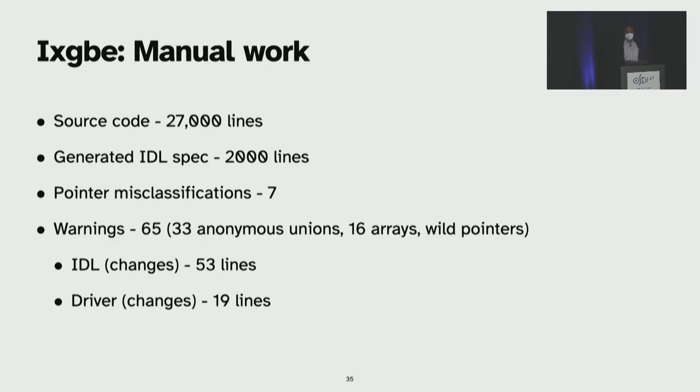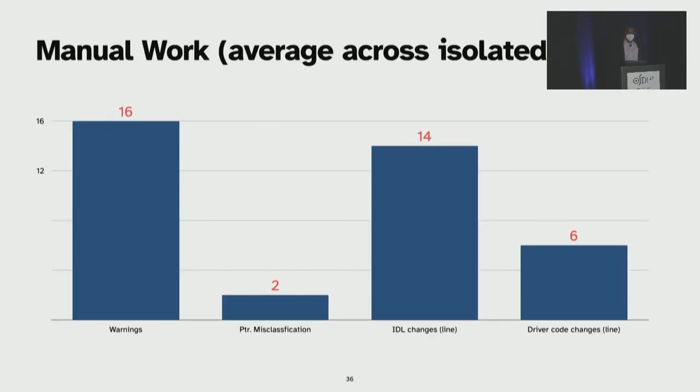However, for some other classes of drivers, there are no changes to the source code. Here we show the average amount of manual work involved across all 10 drivers that we validated and run-tested. On average, we generate 16 warnings, and we misclassify two pointers, which results in 14 lines of change in the IDL and six lines of change in the original driver. And these are all average numbers.